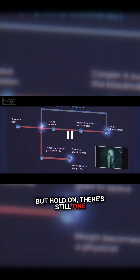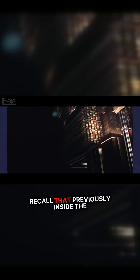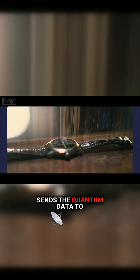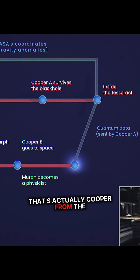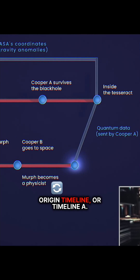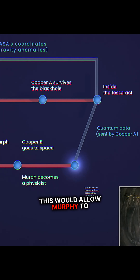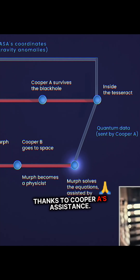But hold on, there's still one more significant event here. Recall that previously inside the tesseract, not only does Cooper send the coordinates, he also sends the quantum data to Murph. As some of you may have guessed, that's actually Cooper from the origin timeline, or Timeline A. This would allow Murphy to solve the gravity equation, thanks to Cooper A's assistance.